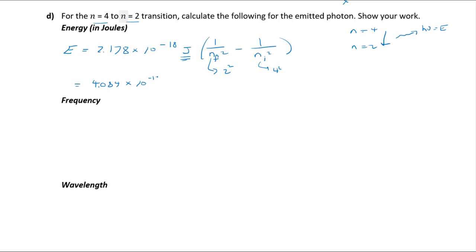The result is approximately 4.084 × 10⁻¹⁹ joules. This is the energy per one photon — a very small number, but that makes sense since one photon doesn't carry much energy. If you had an Avogadro's number of them, you could multiply accordingly. Photon energies typically fall in the 10⁻¹⁸ to 10⁻²⁰ joule range, so if you're getting numbers like that, you're in the right area.